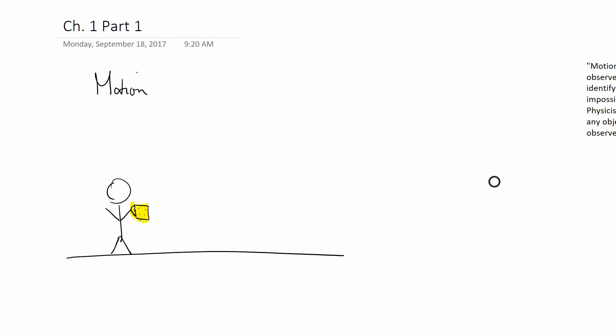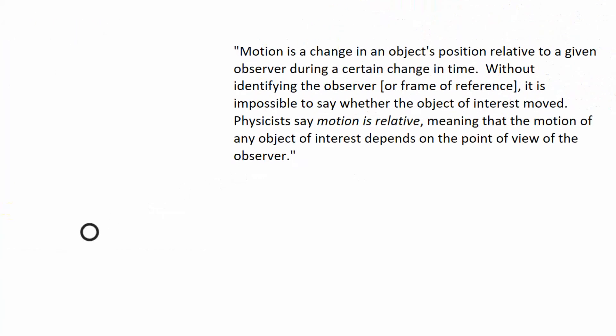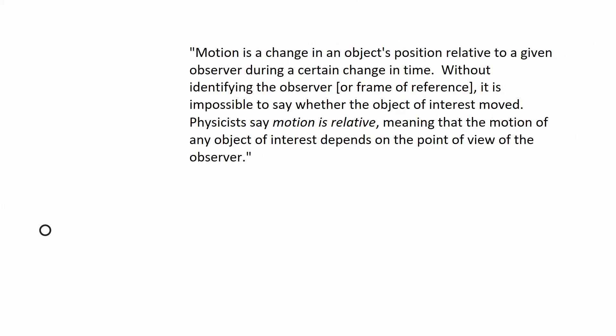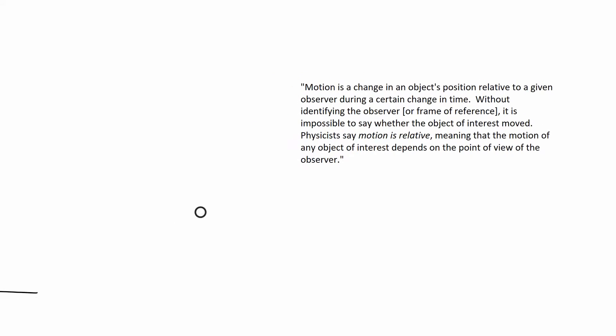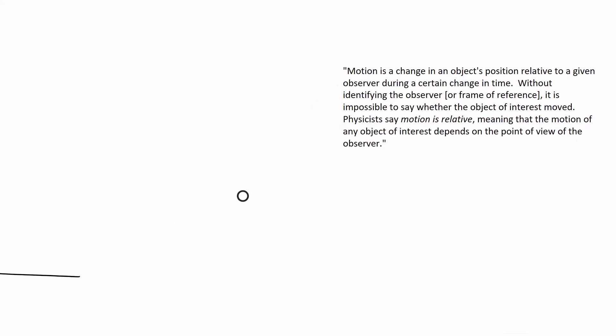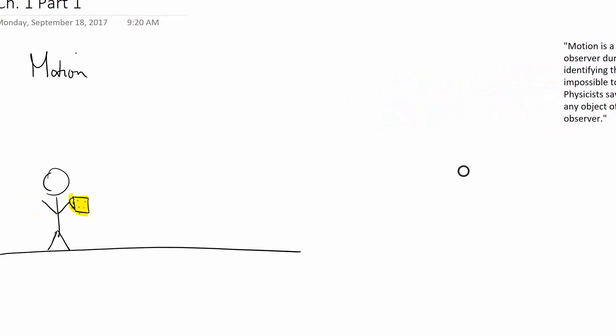Now, if we were to say that this person was in motion, how would we be able to describe this? Well, your textbook says motion is a change in an object's position relative to a given observer during a certain change in time. Without identifying the observer or frame of reference, it is impossible to say whether the object of interest moved. Physicists say motion is relative, meaning that the motion of any object of interest depends on the point of view of the observer.